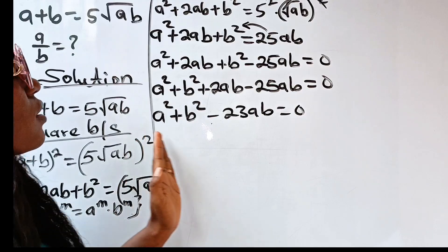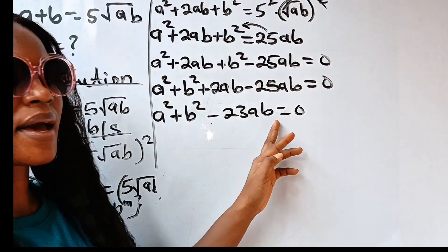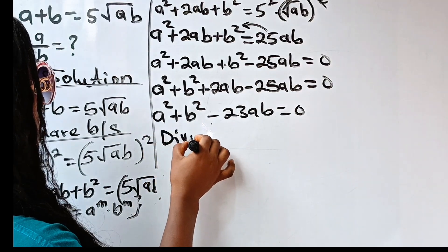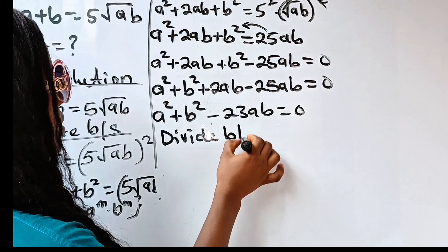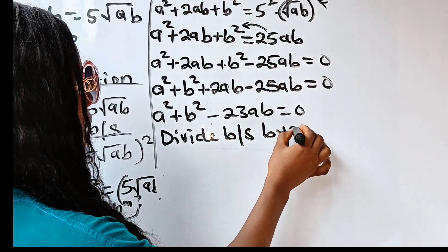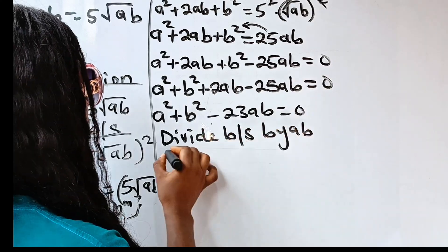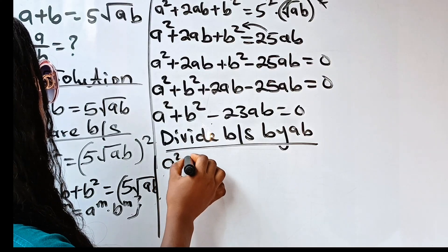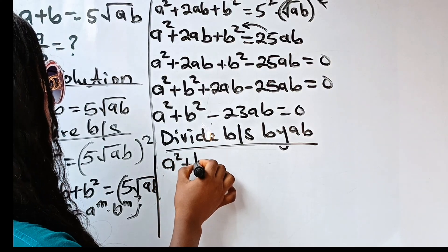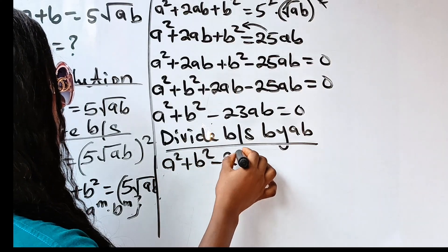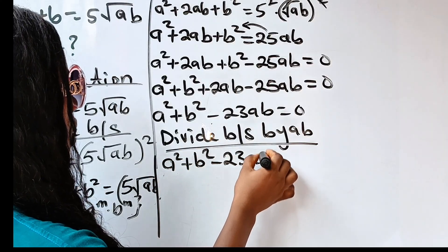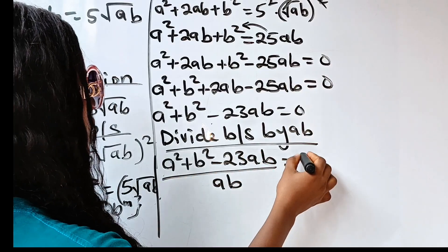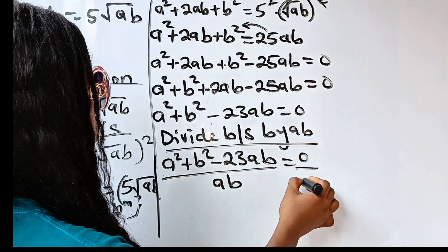Now let us divide through by AB — divide both sides by AB. So we have A squared plus B squared minus 23AB, everything divided by AB, is equal to 0. This is the same as A squared divided by AB, plus B squared divided by AB, minus 23AB divided by AB, equals 0.